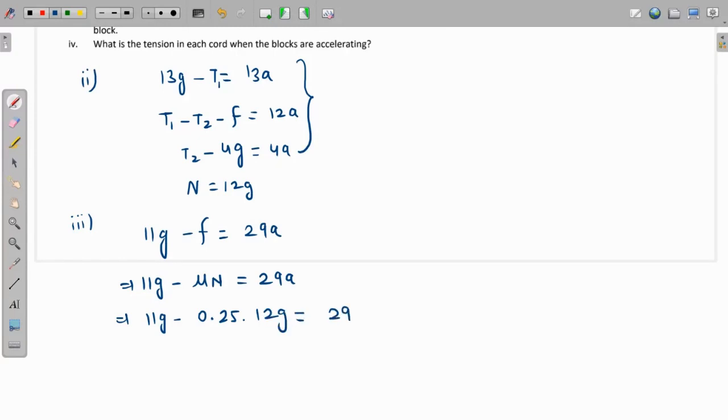So this is 12g and the mu is 0.25, right? So this will come out as 11g minus 0.25 times 12g, and that is equal to 29a. So I think all we have to do is grab our calculator and get this value. So g is 9.8, remember. So 0.25 times 12, 11 minus this value, times 9.8 over 29. So the acceleration is coming as 2.70 meters per second squared.